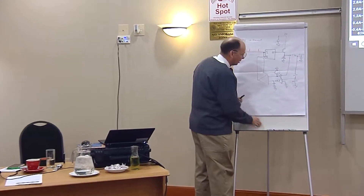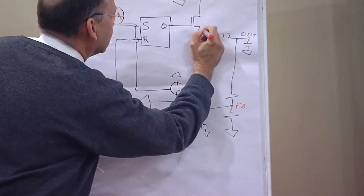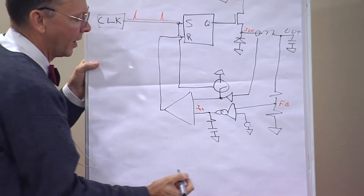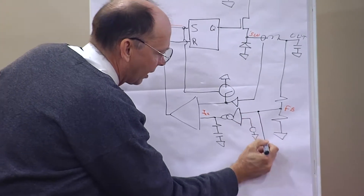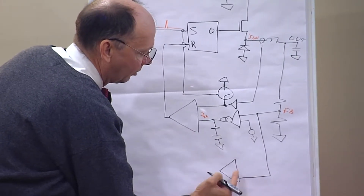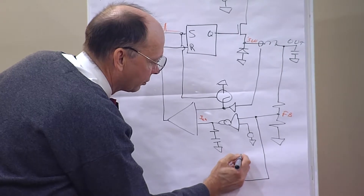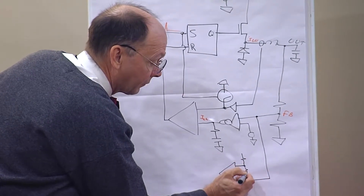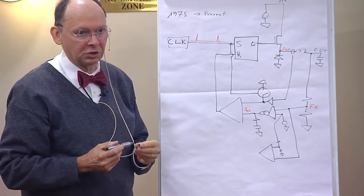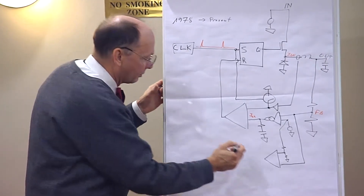The feedback pin drives two signal paths: one goes to the error amplifier - the normal feedback loop - and the other drives the short circuit detector. One side of the short circuit detector is connected to the feedback pin, which is the divided version of the output. The other side is the divided version of the reference. This detects when the feedback voltage is too low by a factor of three.